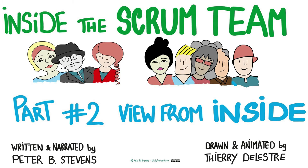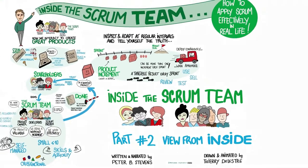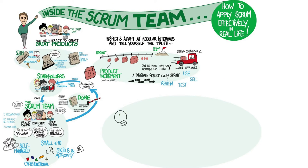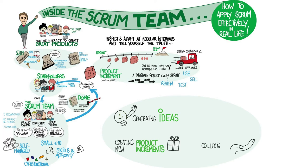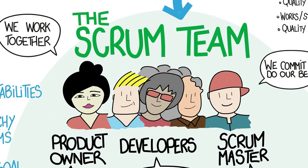Welcome back to Inside the Scrum Team. In Part 1, we looked at how the Scrum Team interacts with the outside world and discovered how product development in Scrum is a continuous cycle of generating ideas, creating new product increments, collecting feedback, and self-improvement. With this video, you will explore how Scrum guides interactions and relationships within the Scrum Team, so you can apply Scrum effectively in real life.